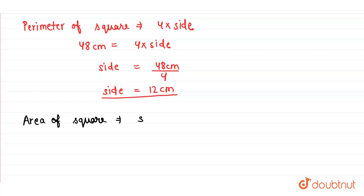The area of square is equals to its side into side. As we found out, the side is equals to 12 centimeter into 12 centimeter. So multiplying 12 by 12, it will give you 144 centimeter square. This is the area of